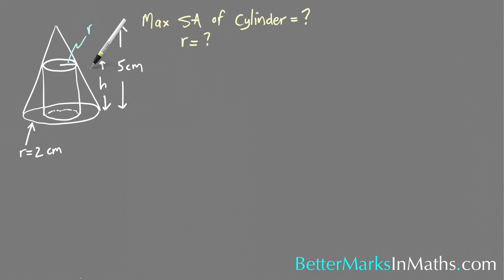In this question there's a 5cm high cone and inside the cone there's a cylinder. What you have to find is the maximum surface area of the cylinder and the radius when it has that maximum surface area. So to find the maximum you're going to need to find the surface area of that cylinder first.